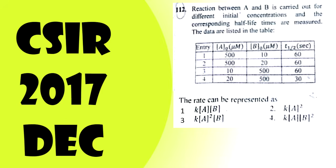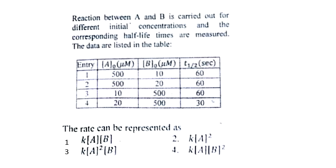Let us look at a question based on chemical kinetics. The reaction between A and B is carried out at different initial concentrations and the corresponding half-life times are measured — the data are listed in the table. We have to find the order of the reaction with respect to A and B, where the rate is equal to K times A raised to X times B raised to Y, and we need to find the values of X and Y.